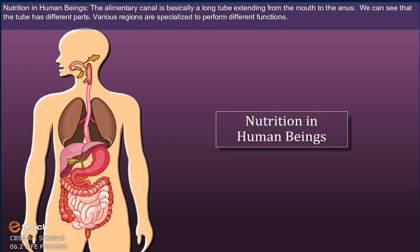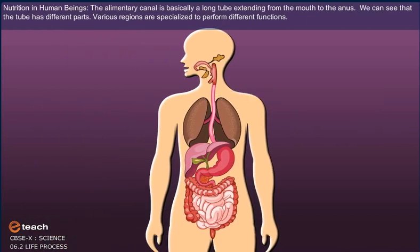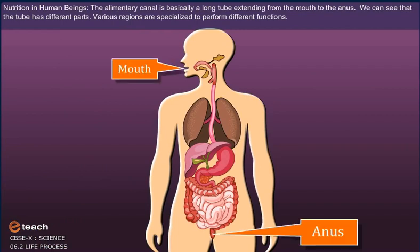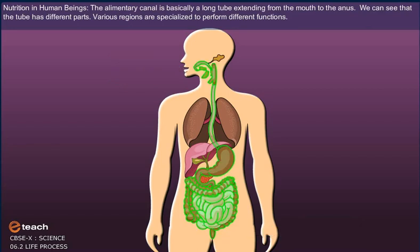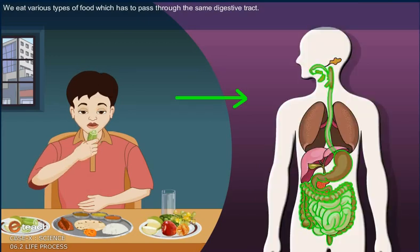Nutrition in human beings: The alimentary canal is basically a long tube extending from the mouth to the anus. The tube has different parts, and various regions are specialized to perform different functions. We eat various types of food which has to pass through the same digestive tract.